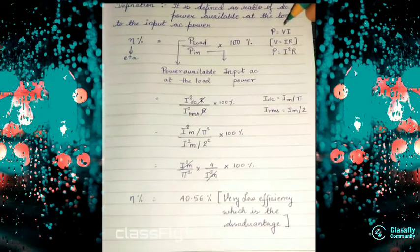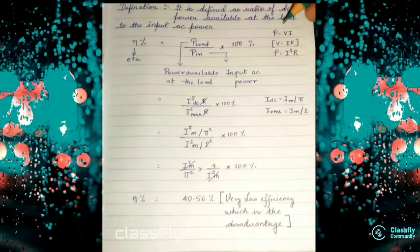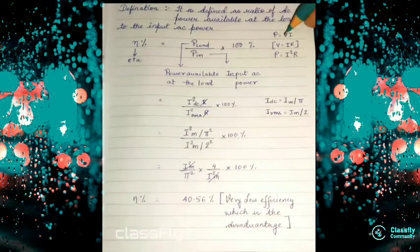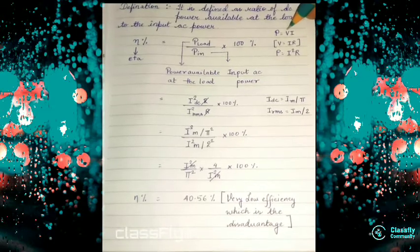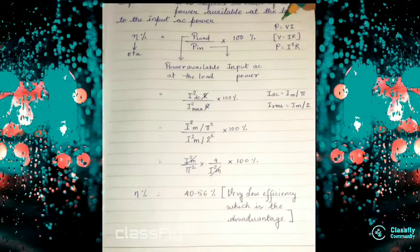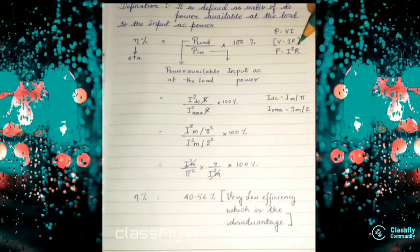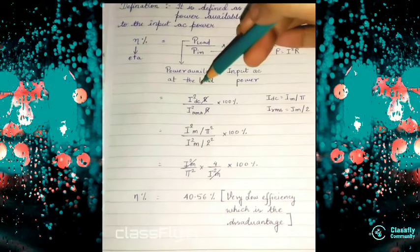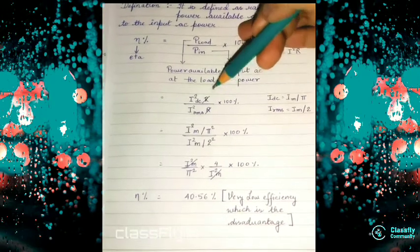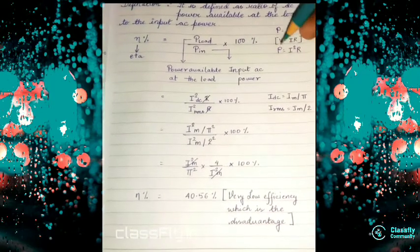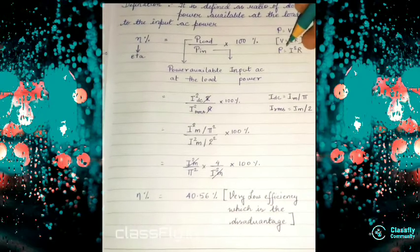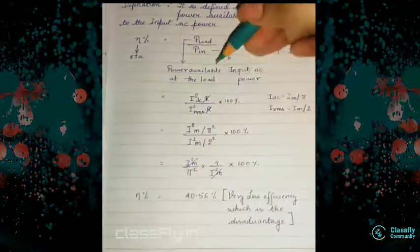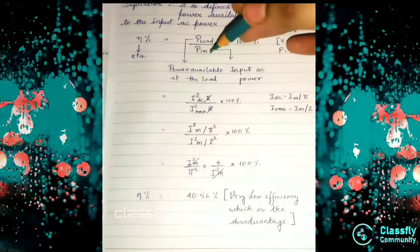We know that power equals voltage times current, and voltage can be written as current times resistance. If we substitute V in the equation P = VI, then P = I²R. We can write P_load as I²_DC × R, and P_in is the AC power.